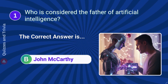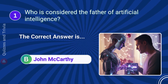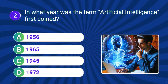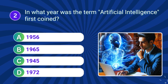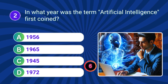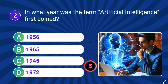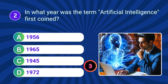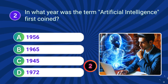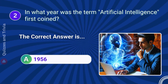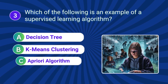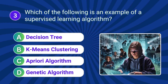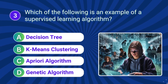Answer B: John McCarthy. In what year was the term artificial intelligence first coined? Answer A: 1956. Which of the following is an example of a supervised learning algorithm?